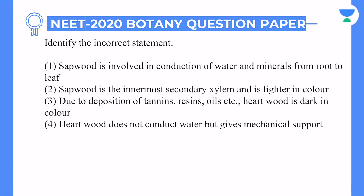So the next question: identify the incorrect statement. First option — sapwood is involved in conduction of water and minerals from root to leaf — which is correct, because it's sapwood; it allows movement. Second option — sapwood is the innermost secondary xylem and is lighter in color. Secondary xylem and lighter color are correct points, but is it the innermost? No.